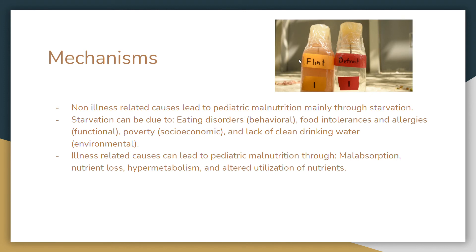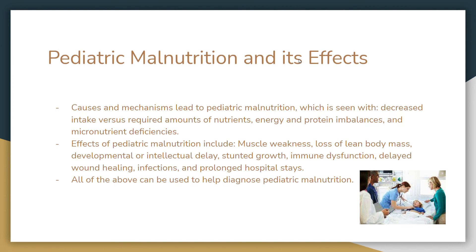Illness-related causes can lead to pediatric malnutrition through malabsorption, nutrient loss, hyper-metabolism, and altered utilization of nutrients. The causes and mechanisms often result in decreased intake versus required amounts of nutrients, energy and protein imbalances, and micronutrient deficiencies. Common micronutrient deficiencies in children include zinc and iron, but we also see calcium, vitamin D, and magnesium deficiencies in kids on vegan diets. Sometimes this gets so bad that children on vegan diets actually have seizures because of their nutrient deficiencies.